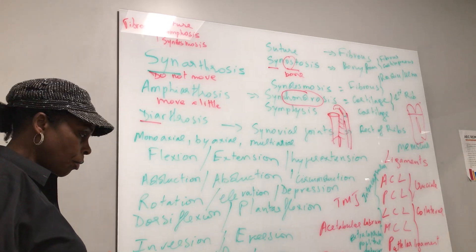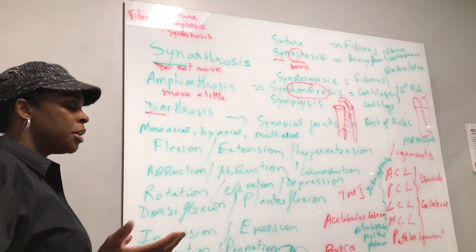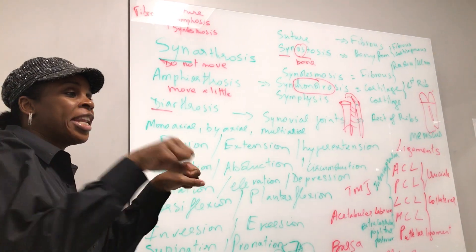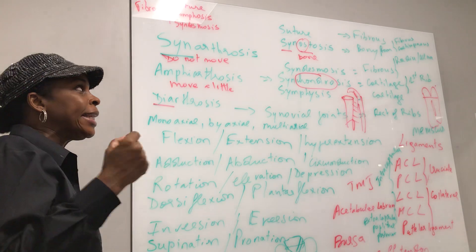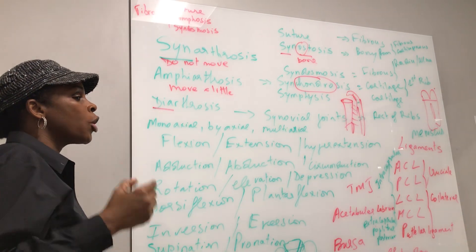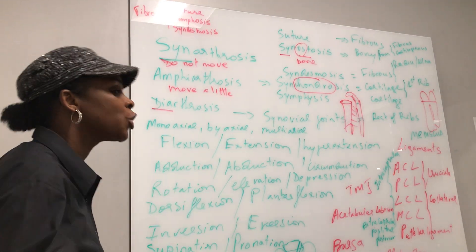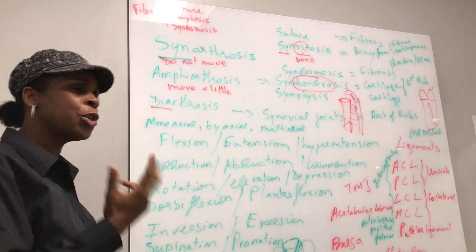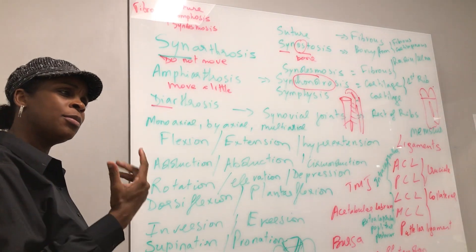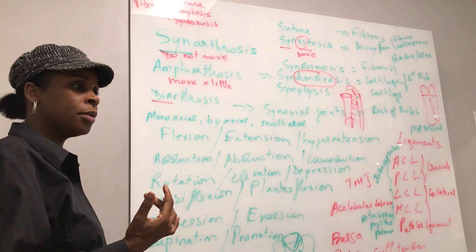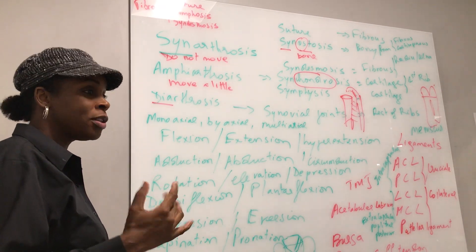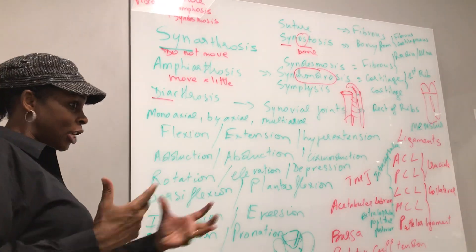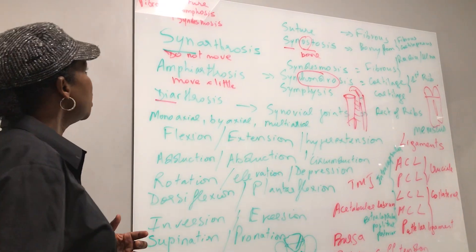Joint. What is a joint? It's just a connection between two bones. And in Latin we call that articulation. Just like when you articulate, you're talking — I am articulate, I'm moving my tongue. It's the same thing: articulation, joint.